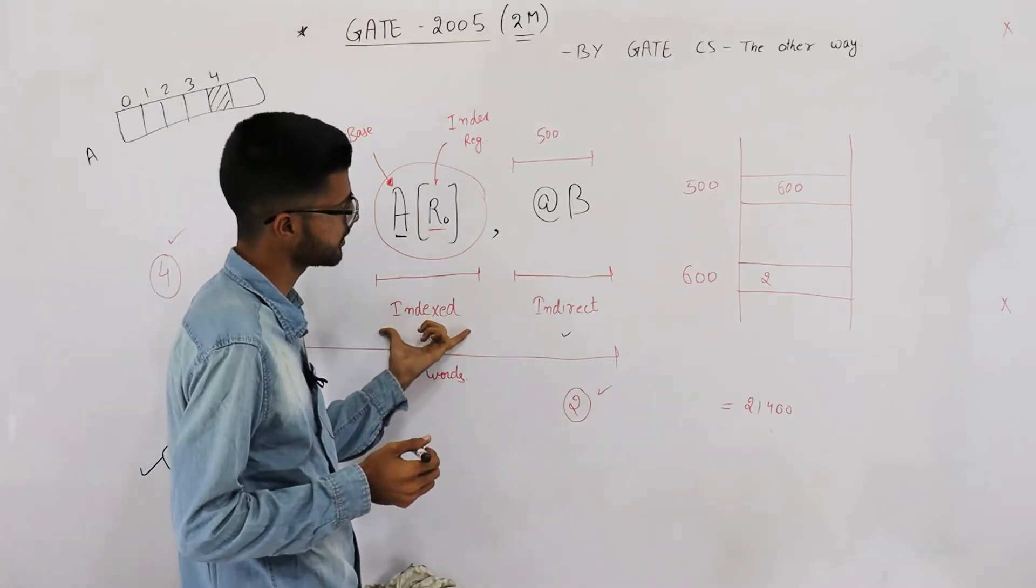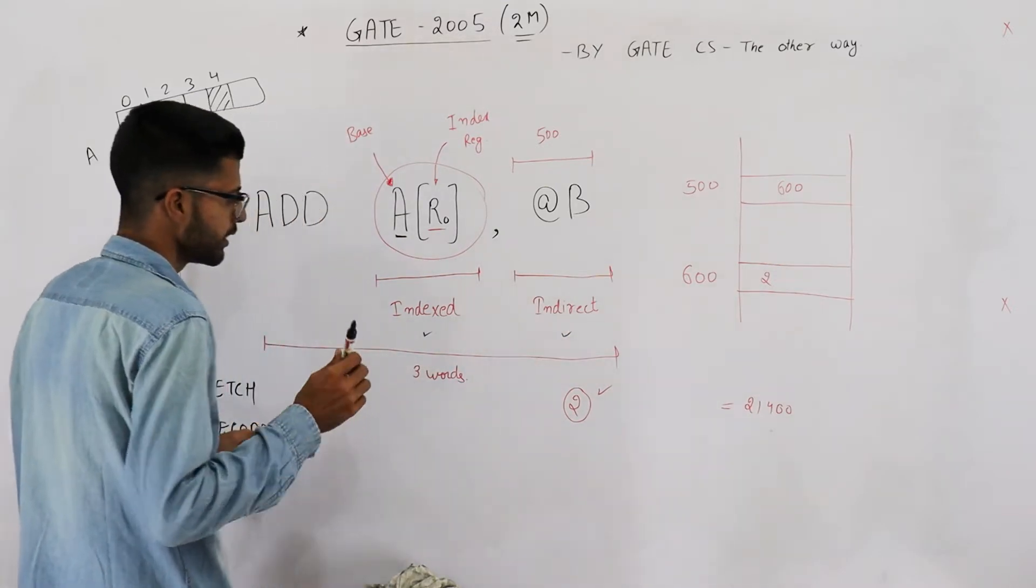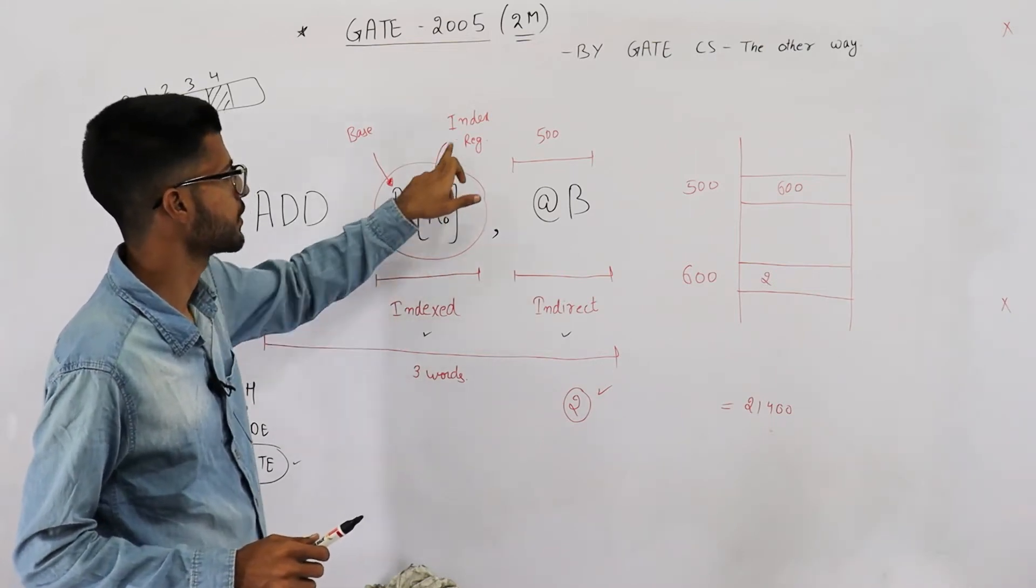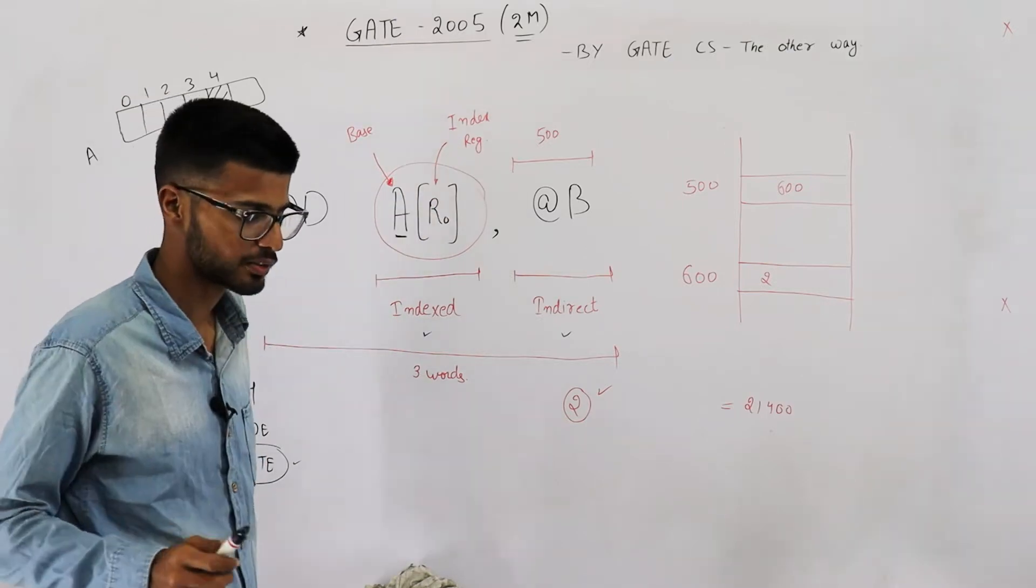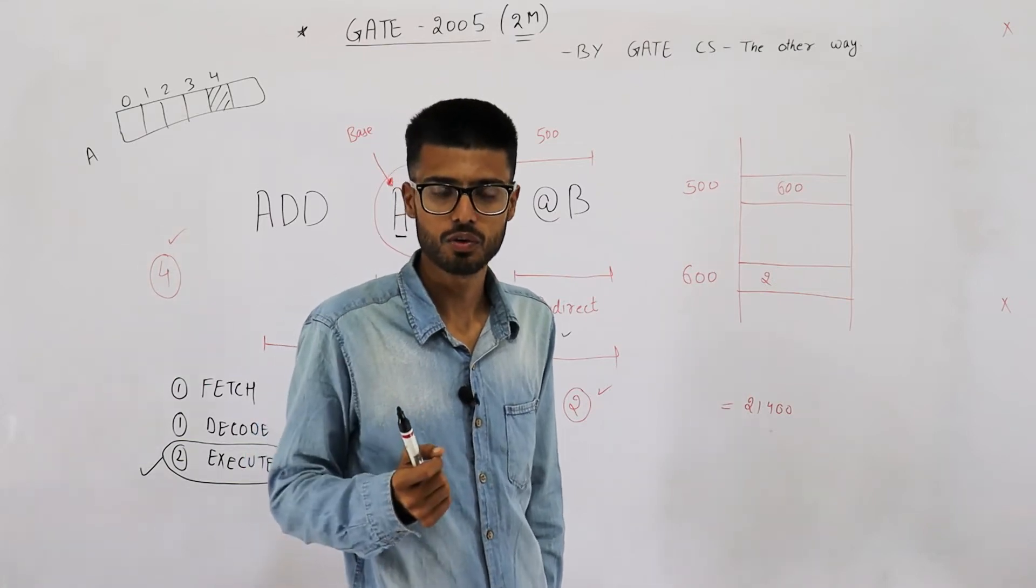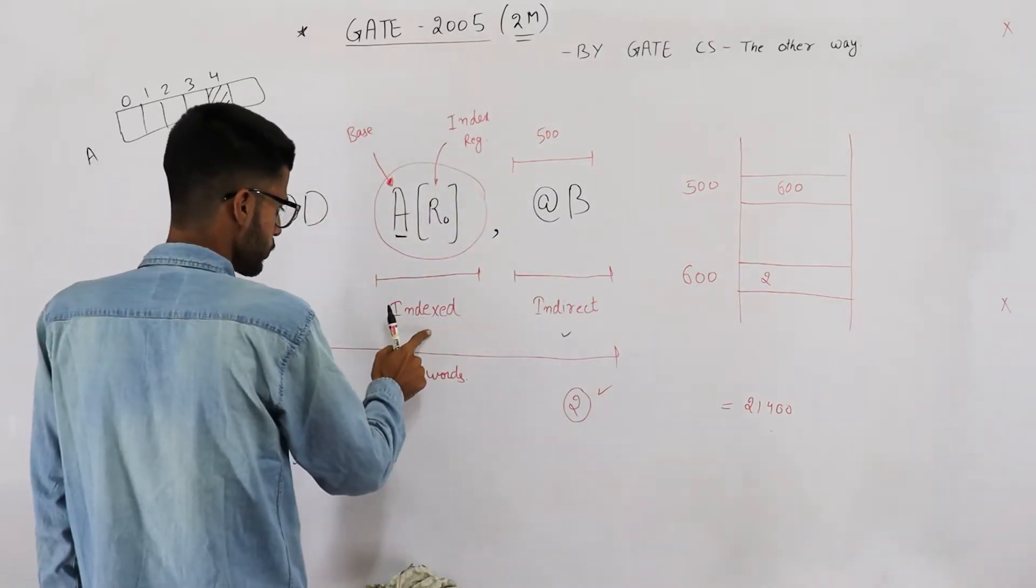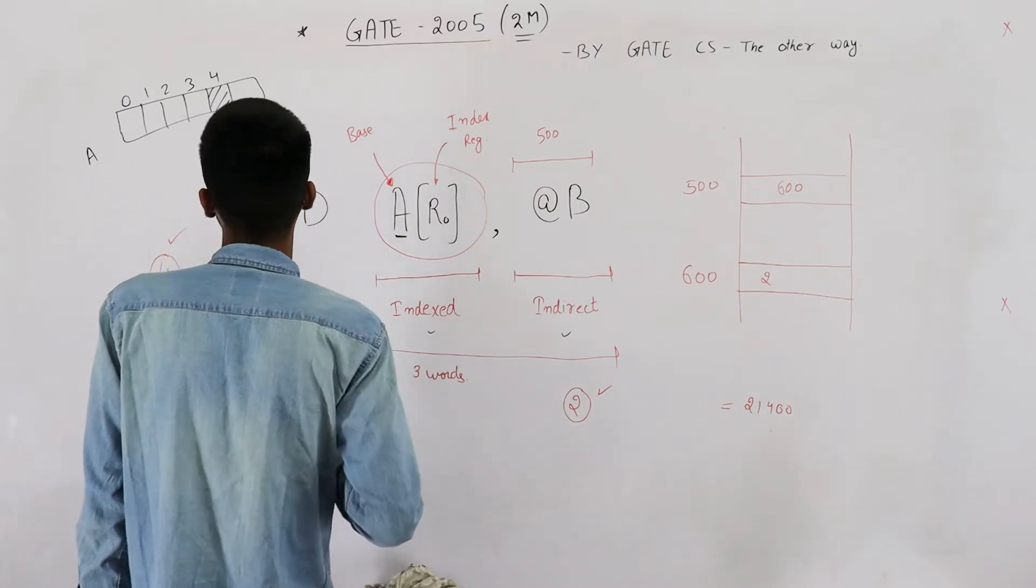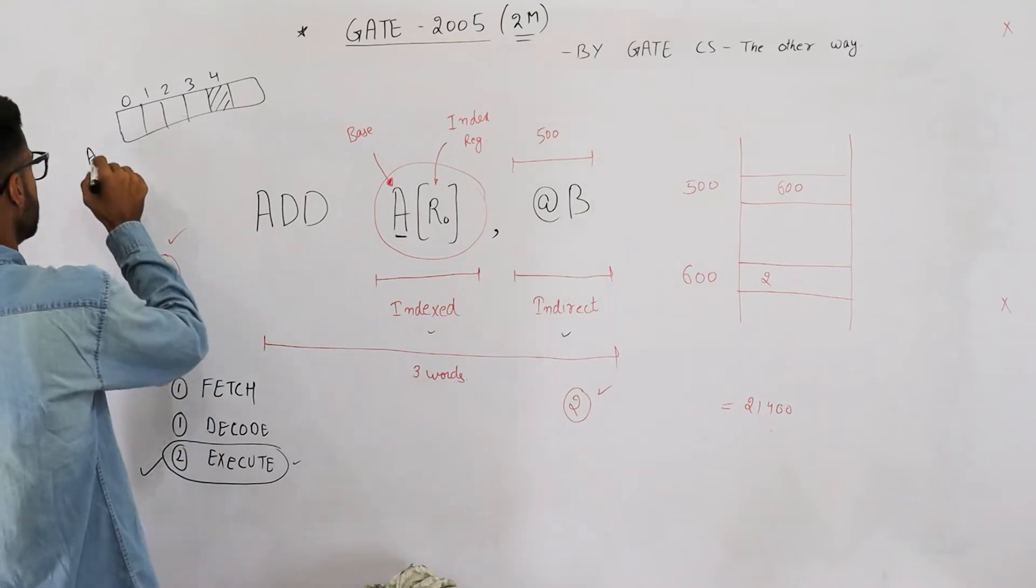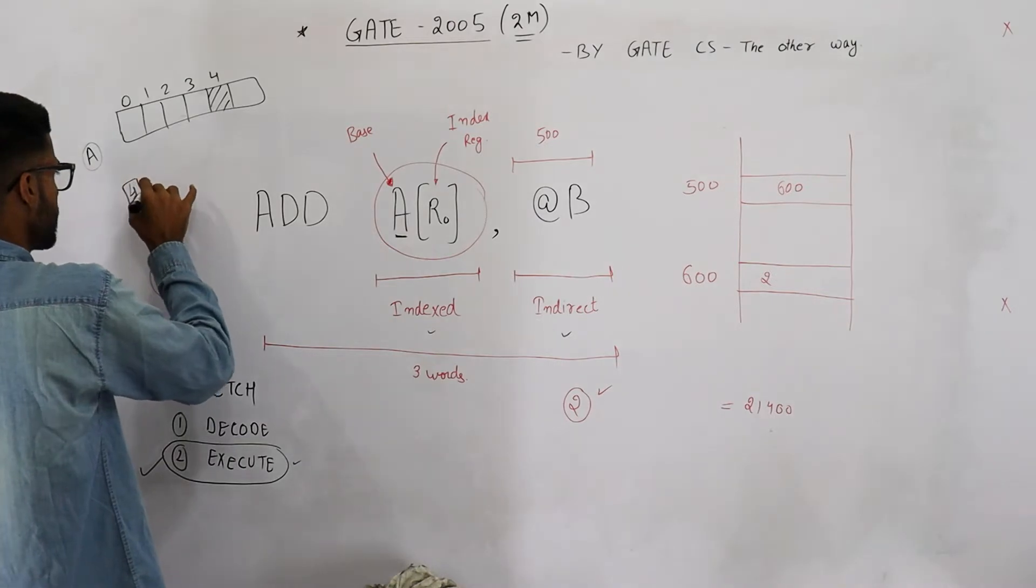The second one uses indirect addressing mode. In indexed addressing mode, you are also given that R0 is the index register. What is the meaning of this? R0 will save the index of the element in array that we want to access. This indexed mode is mostly used for array implementation. For example, you need to access the fourth element of array A, what you're going to do is you will save 4 in the index register.